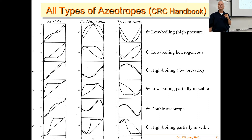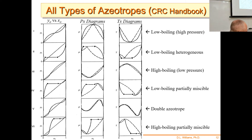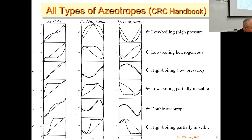We also have the px diagrams in the middle and the tx diagrams on the right. When you have a low-boiling azeotrope, the boiling point of the azeotrope is lower than the pure components — low boiler means high vapor pressure, which means lower boiling point. The px and tx plots are inverse from each other: high vapor pressure means low boiling point — that principle should be ironed into your head. Here's a high-boiling azeotrope — not very volatile, so low vapor pressure gives a high boiling point.